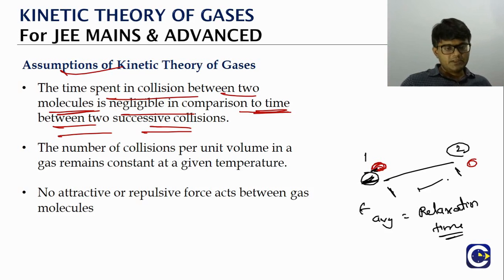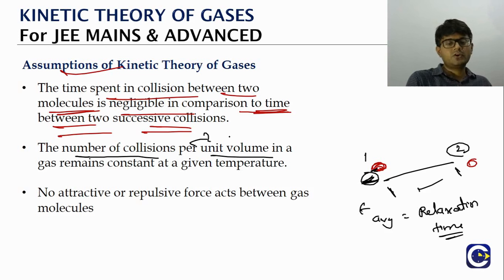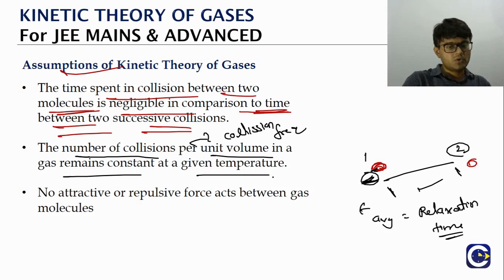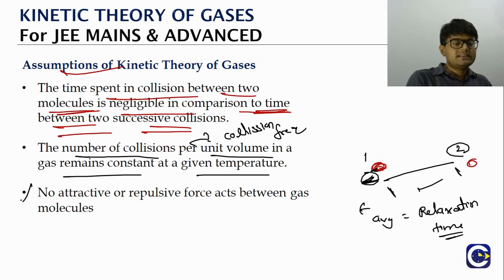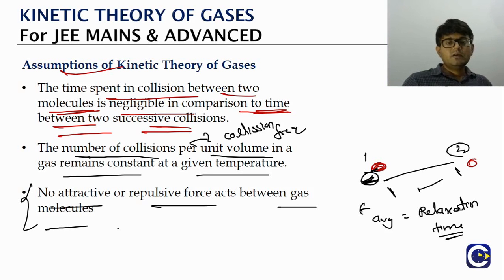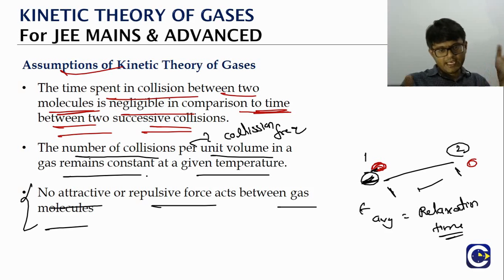The number of collisions per unit volume — the collision frequency — remains constant at a given temperature. If temperature increases, gas velocities increase and collision frequency increases. Another key assumption: there are no attractive or repulsive forces between the gas molecules.